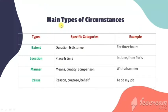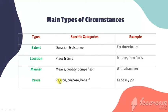There are four main types of circumstances. First, extent, which explains duration or distance — for example, 'for 3 hours.' Second, location, which explains place and time — for example, 'in June, from Paris.' Third, manner, which means quality or comparison — for example, 'with a hammer.' Fourth, cause, which specifies reason, purpose, or behalf — for example, 'to do my job.'